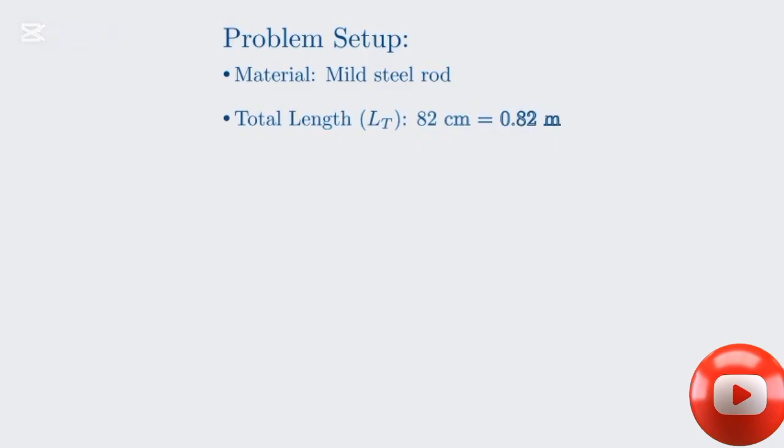Let's begin by breaking down the problem description and identifying all the given information. We have a mild steel rod. Its total length is 82 centimeters, which we'll need to convert to meters, giving us 0.82 meters. The diameter of the rod is 66 millimeters, which is 0.066 meters.